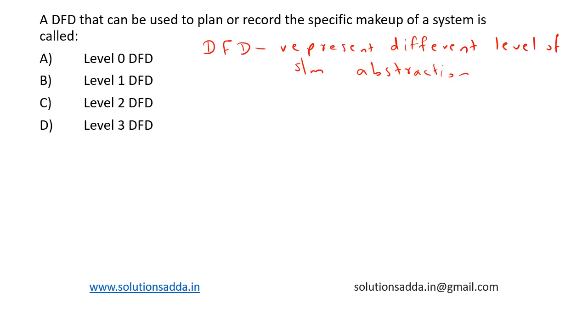So let's see each level of abstraction one by one. Level 0 is the highest level of abstraction. It provides just an overview of the entire system.